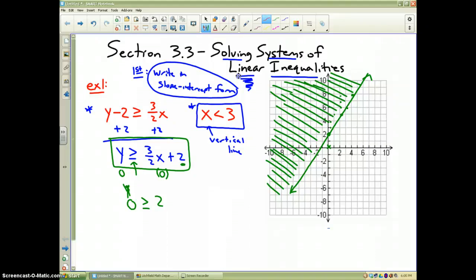So all answers that are up here are solutions to that particular inequality. Now the second one I'm going to do in red. It's a vertical line at 3. Now I do notice that the symbol is less than, there is no equal to part. So therefore it is a dotted line at 3. So I'm going to draw a vertical dotted line at 3.